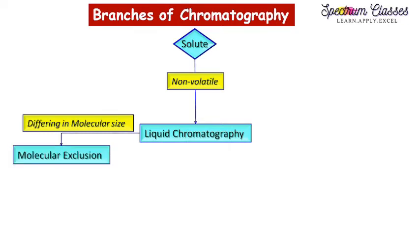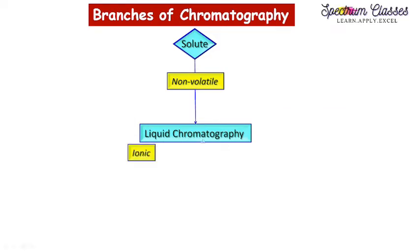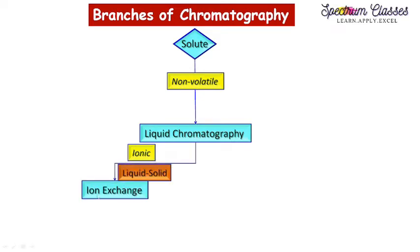If the solute is non-volatile, we go for liquid chromatography, which is further divided into different types. If there is a difference in molecular size among the solutes, we use molecular exclusion chromatography. If the solute has biological specificity, we use affinity chromatography, where special ligands interact with the biologically specific solute to separate mixture components. If the solute is highly ionic, we use ion exchange chromatography, where an ion exchange resin serves as the stationary phase, liquid as the mobile phase, and the mechanism is ion exchange.